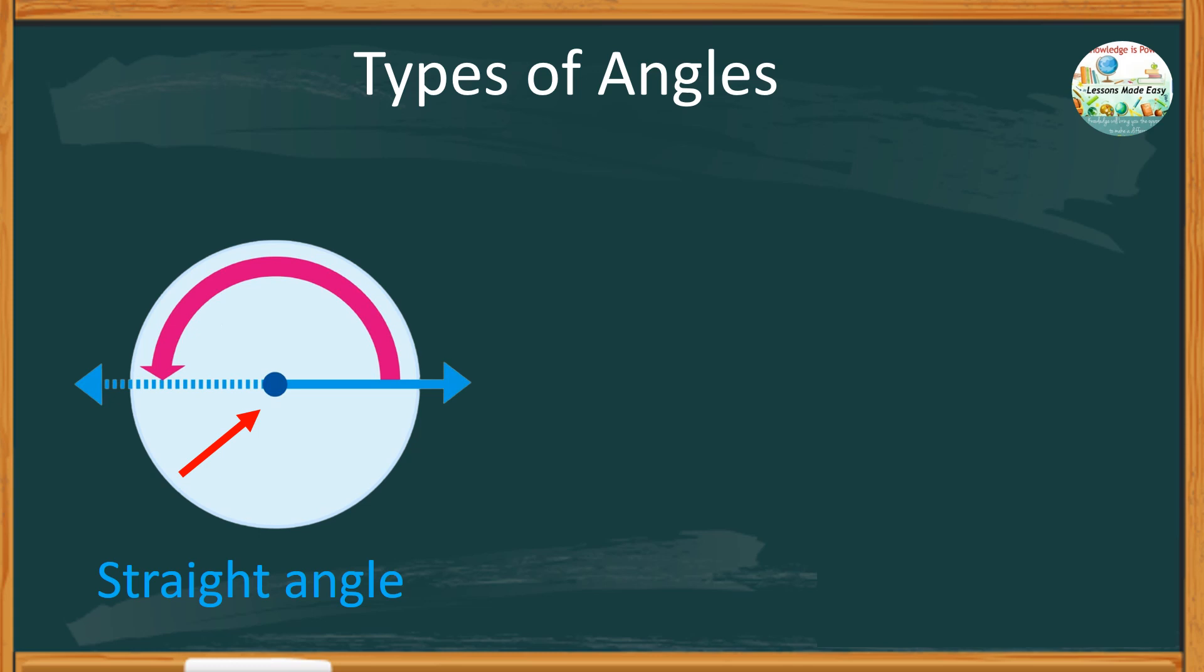But what is the size of a straight angle? See what happens if we have a perpendicular line drawn from the vertex. Do you notice two right angles? If a right angle is exactly 90 degrees, then twice this number means a straight angle is exactly 180 degrees.